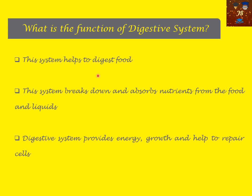So what are the functions of the digestive system? This system helps to digest food — whether consumed cooked or raw, the acids and enzymes of the digestive system help break it down. This system breaks down and absorbs nutrients from food and liquids for our energy. The digestive system provides energy, supports growth, and helps repair cells.